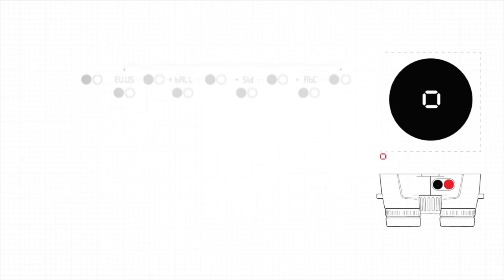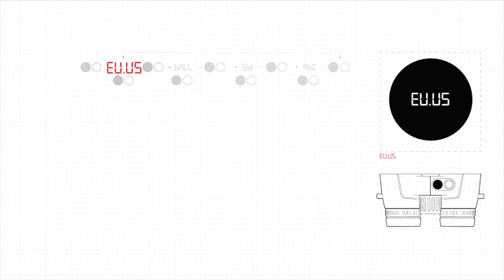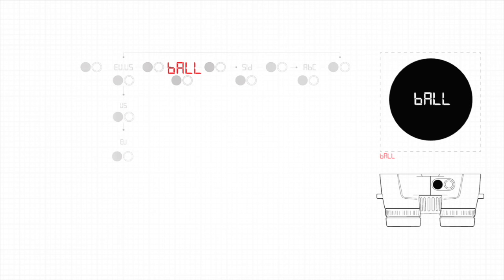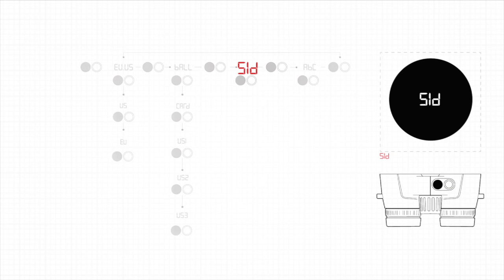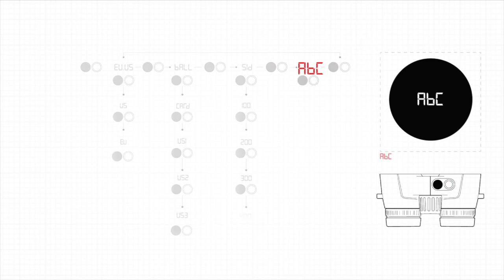First, hold down the secondary button for three seconds. Then press the measurement button to access the EU-US menu, and press the secondary button to select US. The menu then forwards you to the ballistics menu. Press the measurement button to access it and select card from the options by pressing the secondary button. The SID menu then appears — press the measurement button to access it and set your range at 100 yards by pressing the secondary button. Lastly, the ABC menu will appear. Press the measurement button to access it, press it again to toggle to the holdover option, and press the secondary button to select it as your ABC output.